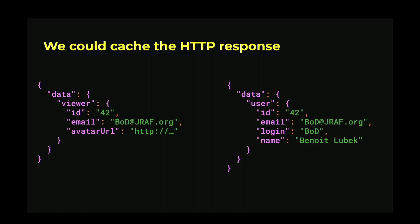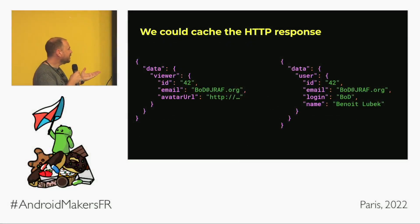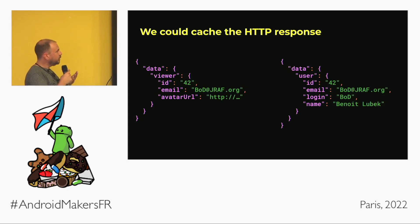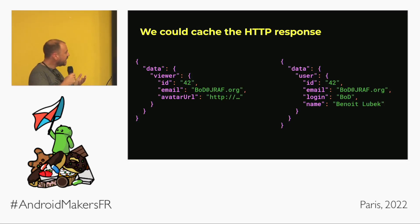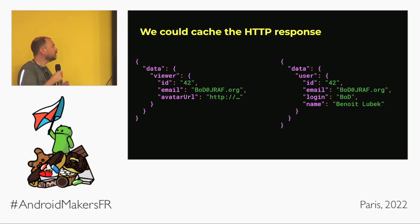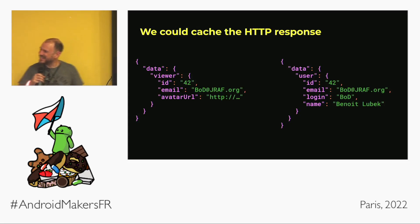Another option is to cache the HTTP responses — the JSON values directly. That could be a good first approach because it's easy to implement and easy to reason about. But it's not ideal either, because you could have two payloads representing the same entity with the same ID stored twice — wasting cache space. Also, refreshing one wouldn't refresh the other, leading to cache inconsistency.